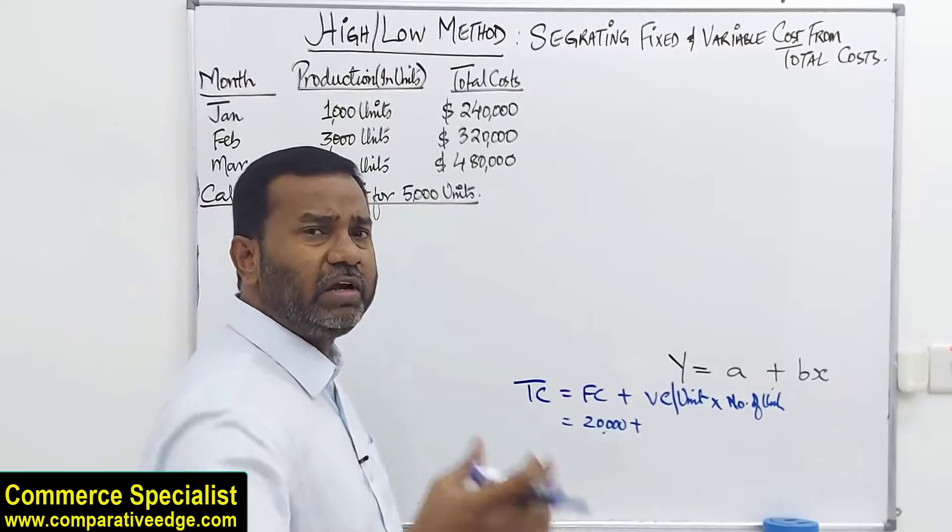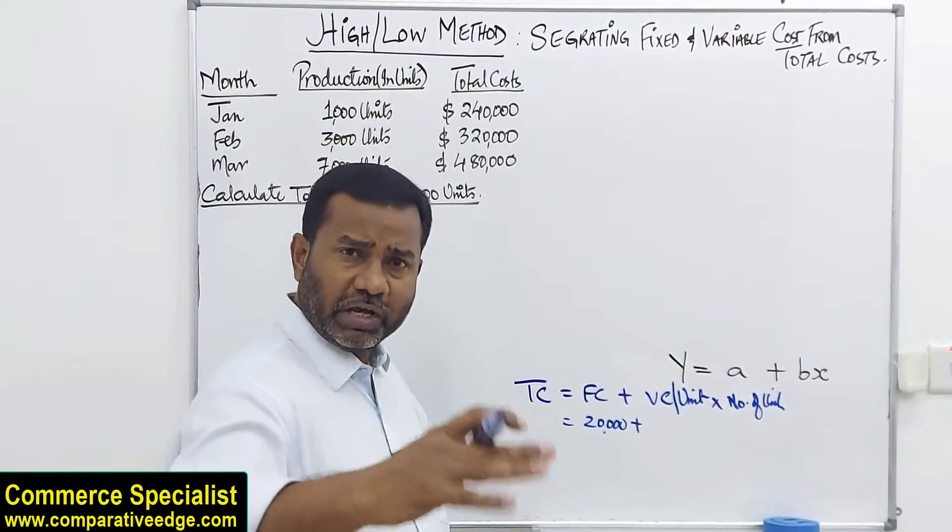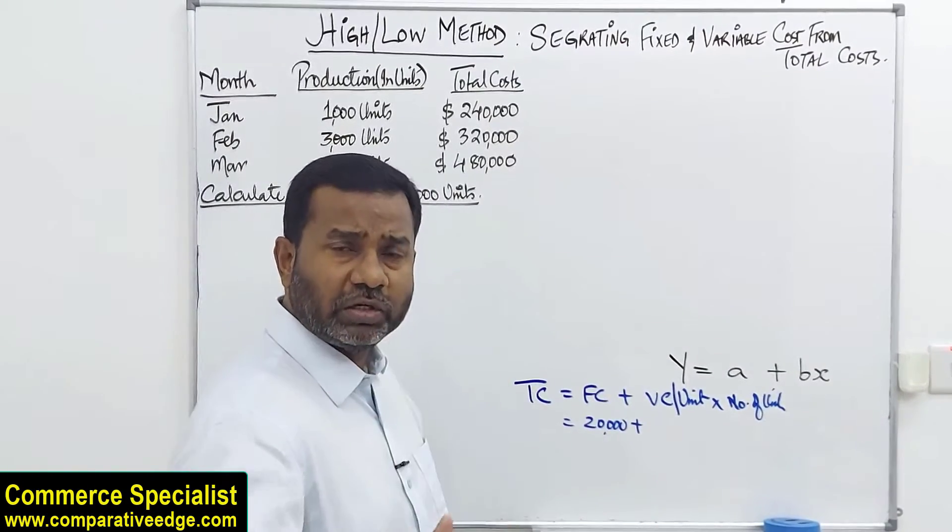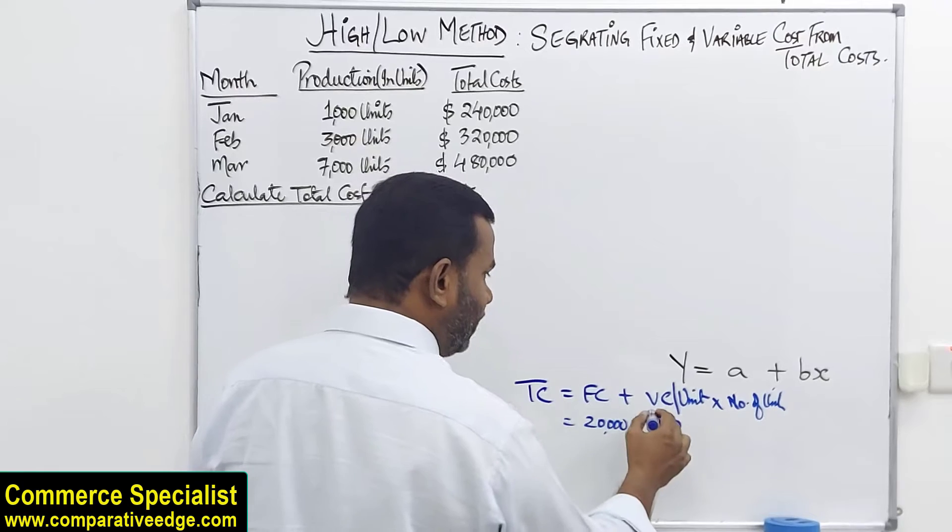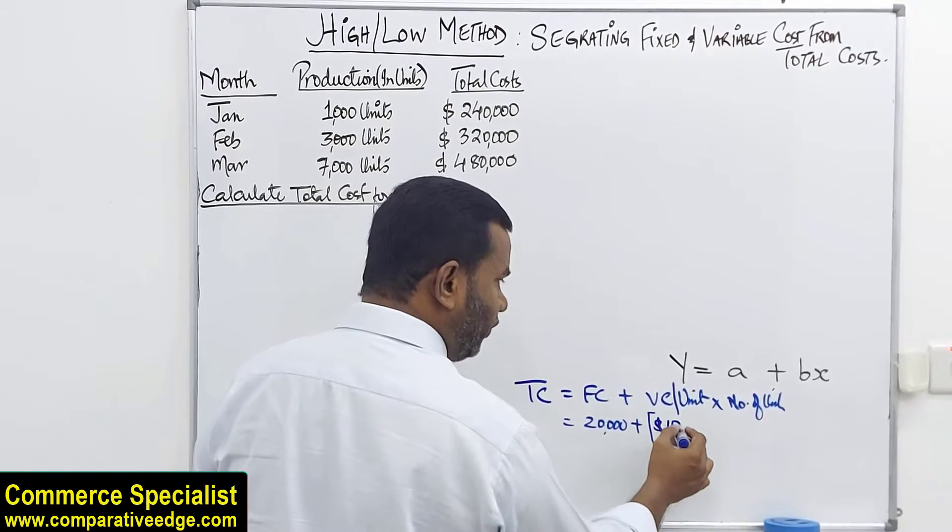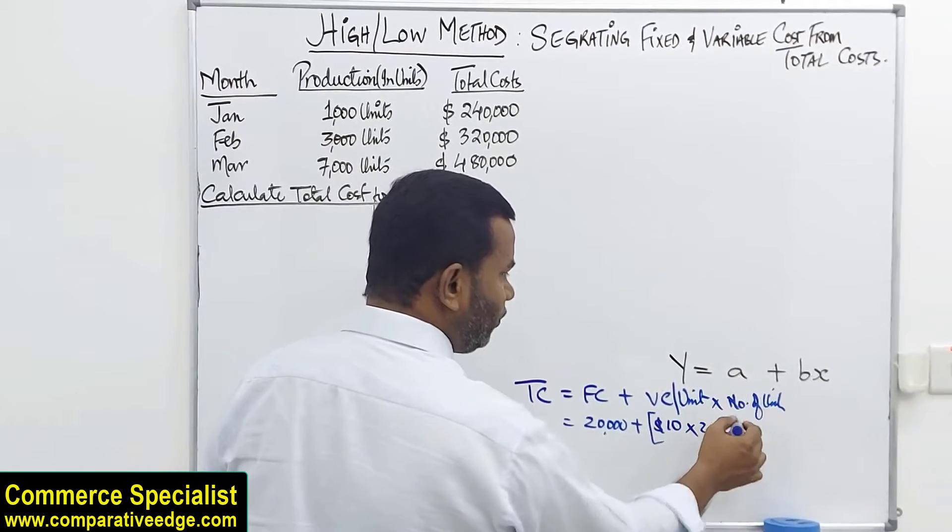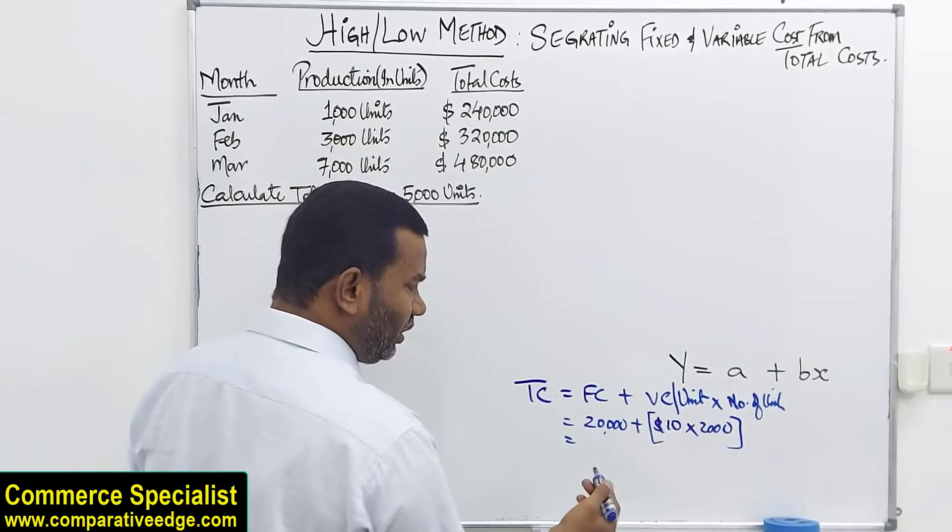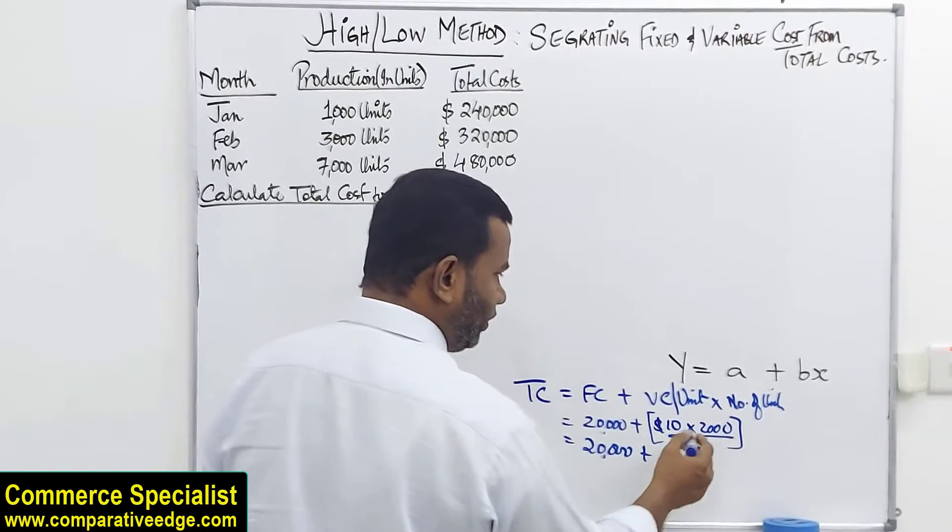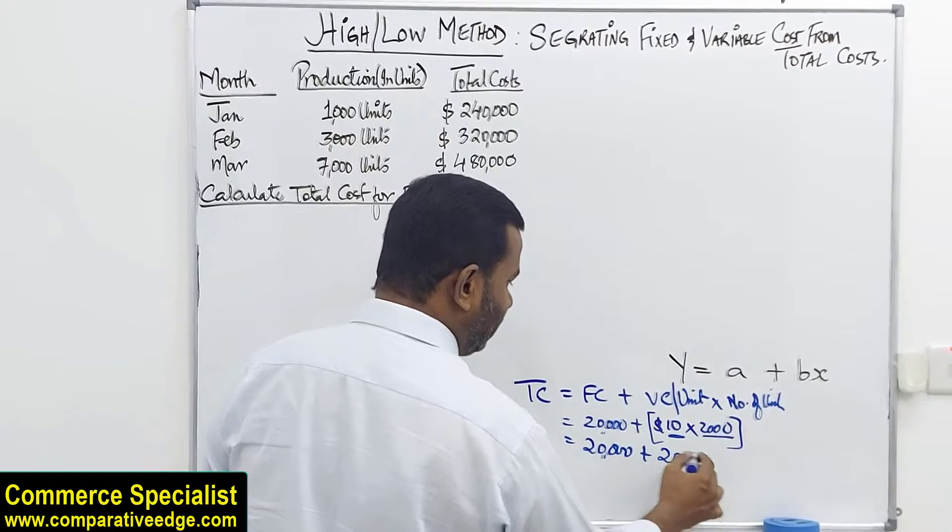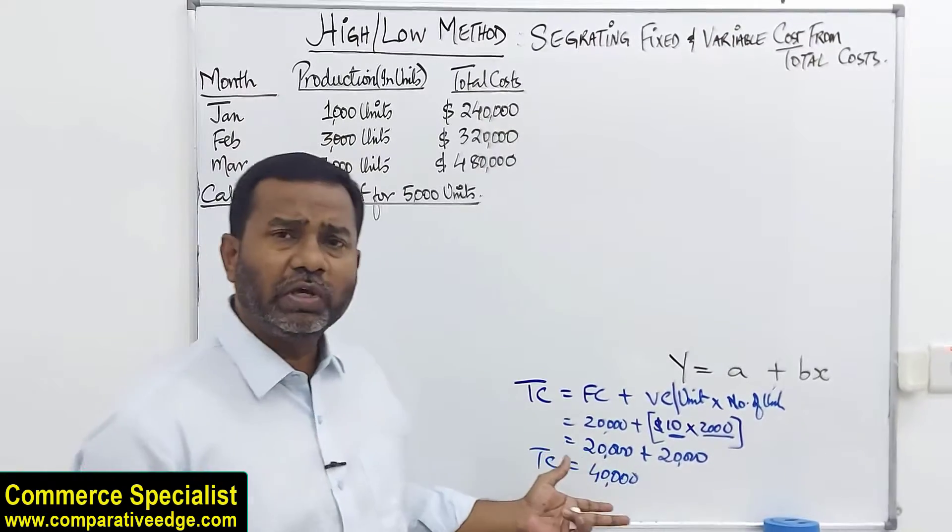Variable cost per unit is let's say $10. This $10 includes cost of direct material, direct labor, variable production overheads which I have already explained in my previous video. So $10 is variable cost for one unit and assume we are talking about 2,000 units. You can easily calculate total cost. Fixed cost is $20,000. Variable cost for one unit is $10 and we are talking about 2,000 units. When you multiply it comes to $20,000. So your total cost is $40,000.